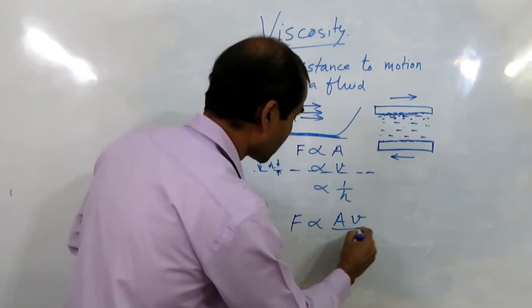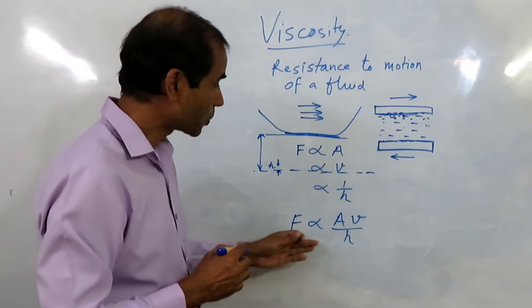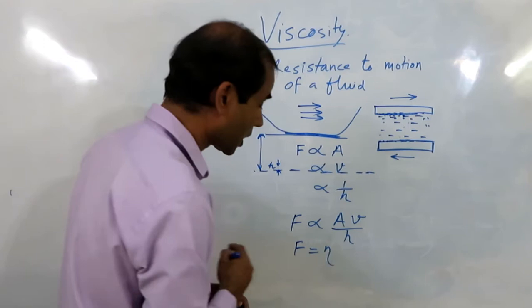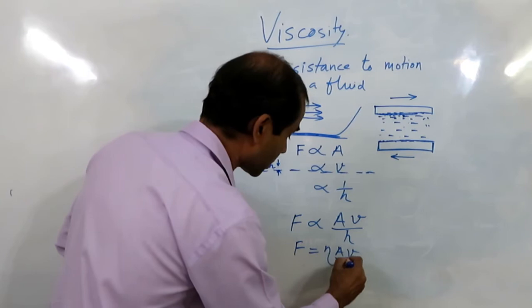If we convert this into an equation with an equal sign, then we introduce a constant eta. The constant eta is known as viscosity and that is the property of a liquid.